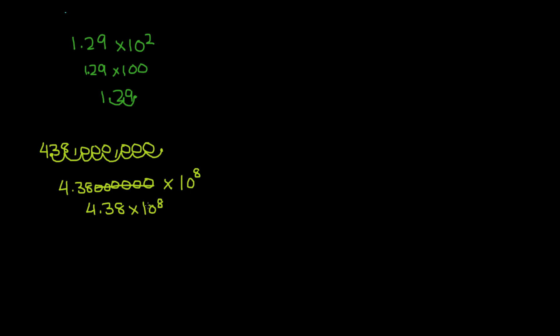And once again, you can check this by doing the math — 10 to the power of 8 would be 1 followed by 8 zeros, times 4.38, and you would get 438 million. So that's all I have for you guys today. I hope you learned how to use exponents in scientific notation. Anytime you have a big number, you can rewrite it in scientific notation. We'll see you guys next time. Bye!